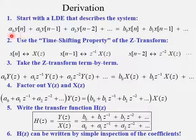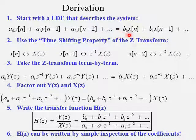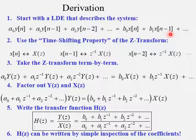We have coefficients: a0 times y of n, plus a1 times y of n minus 1, plus a2 times y of n minus 2, and so on. Those are all the output terms on the left. And then on the right, we have all of the input terms — b0 times x of n, plus b1 times x of n minus 1, and so on.